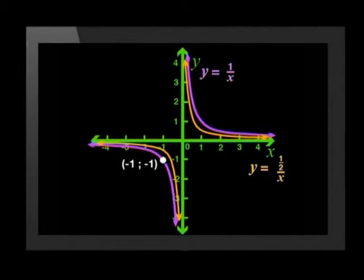Negative 1, negative 1 on the parent graph becomes negative 1, negative a half on the new graph. And in the first quadrant, we take 1, 1 on the parent graph. It becomes 1, a half on the new graph. I think I've got it. Each y value on the graph y equals half over x is half of the y value on the parent graph. Right!